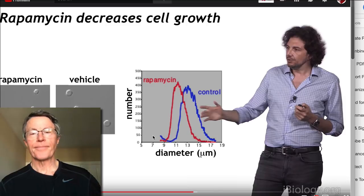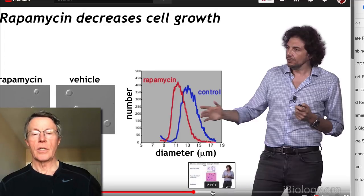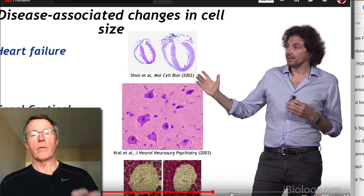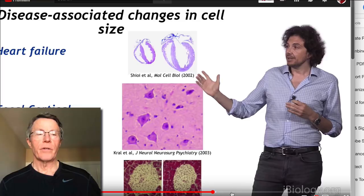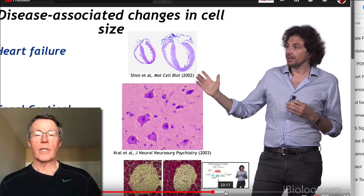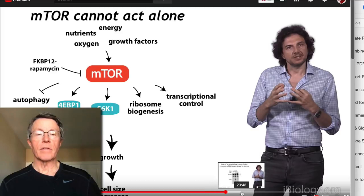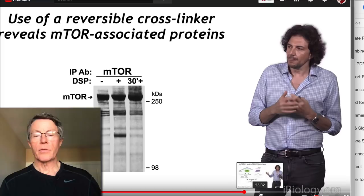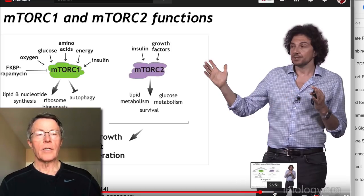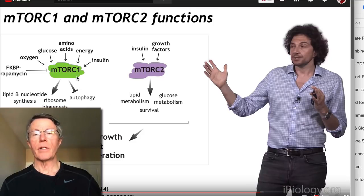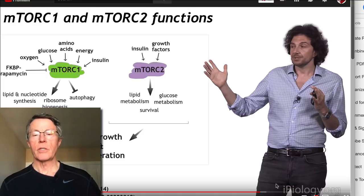This goes into some of the lab proof they used to show that rapamycin actually stops cell growth, not division. He also gets into application of this to other diseases like heart failure, some neurological diseases, and diabetes — where mTOR and cell growth get involved. There are several other places where they talk about cancer. Here is where they start to get deeper in terms of differentiating the roles and impacts from mTORC1 and mTORC2 — the two components of mTOR.